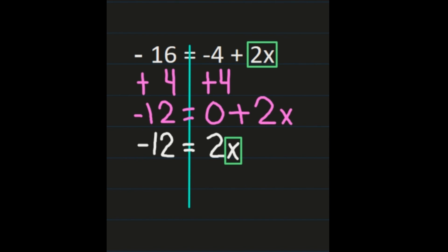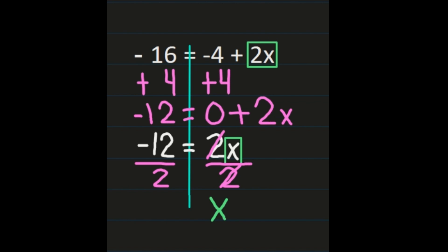I have 2 times x, so the inverse of multiplication is to divide. I'm going to divide by 2 on both sides. The 2s simplify out on the right, leaving just x. On the left, I have a negative divided by a positive, which is a negative, and 12 divided by 2 is 6, so I have negative 6. My solution is negative 6 equals x. Remember, to check your solution you go back to the original equation and substitute what you got for the variable — negative 6 for x — and make sure you get a true statement.